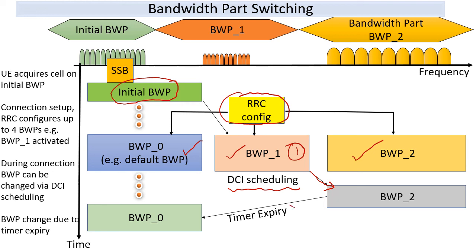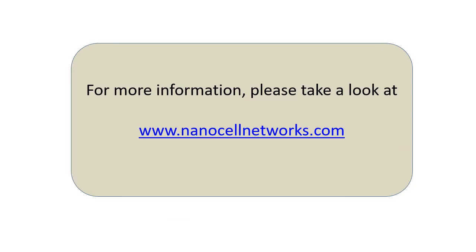If we do not have much data, we can fall back to a lower default bandwidth part, either explicitly mentioned or implicitly as part of the configuration. Bandwidth parts have nice ideas for helping us manage a variety of problems and have enough flexibility, and we hope this will help 5G stand out, especially as we go and accommodate newer applications, wider bandwidths, etc. Thanks for listening. Please take a look at our website for more information.